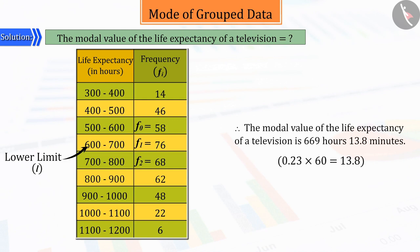Therefore, we can say that the life expectancy of the television sets is 669 hours and 13.8 minutes.